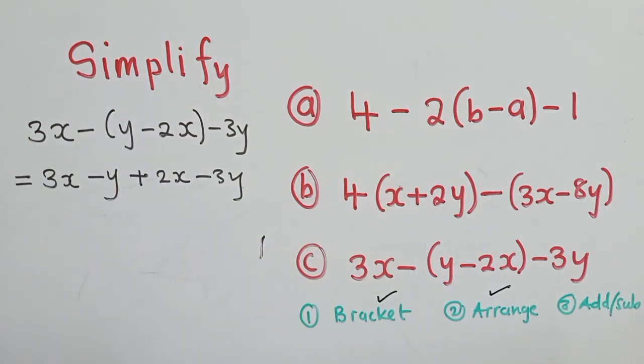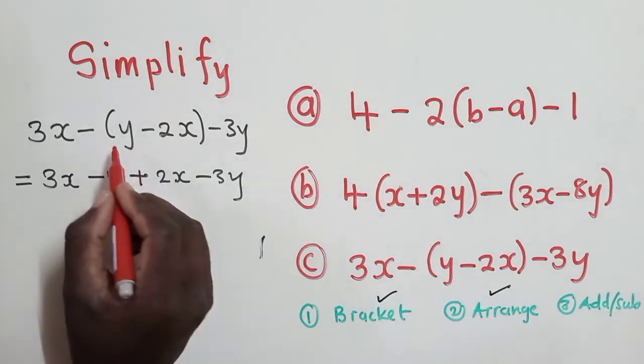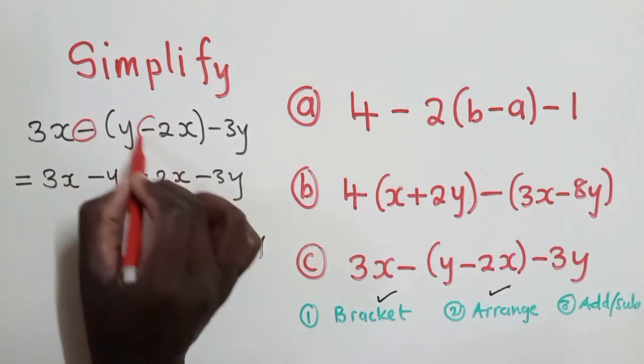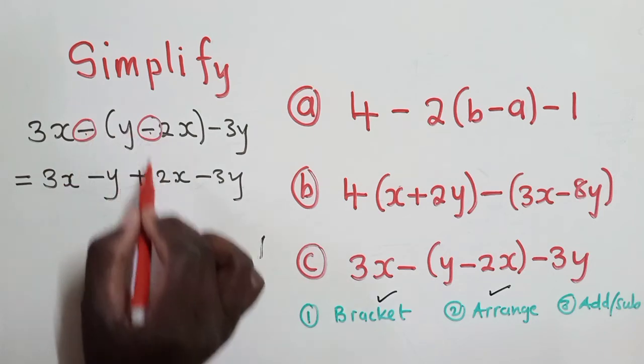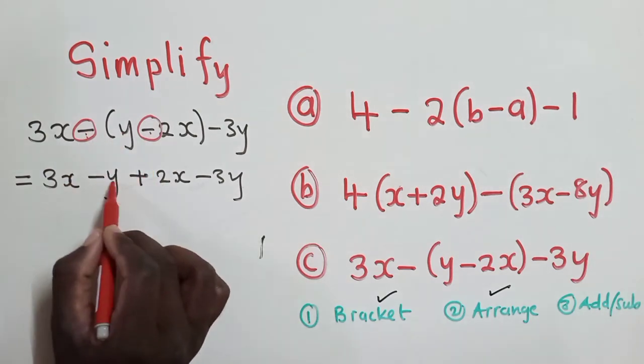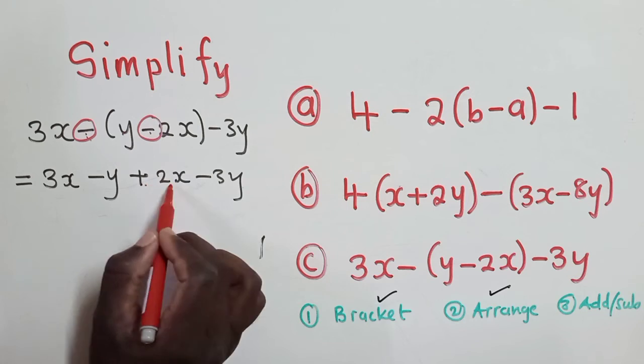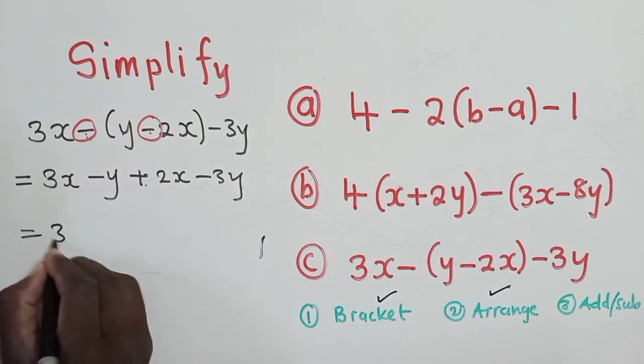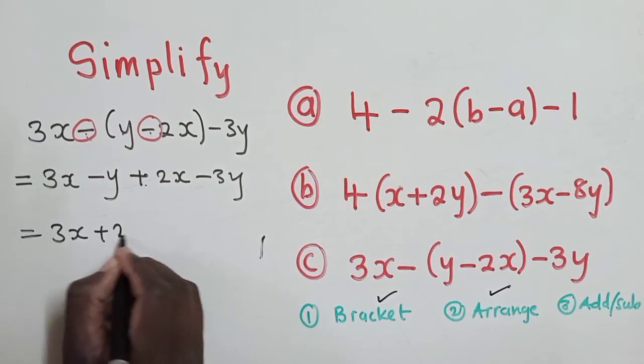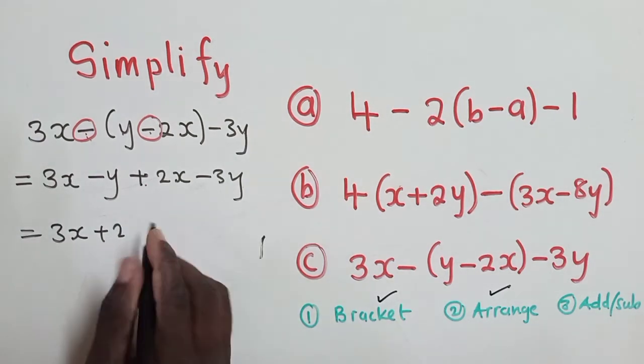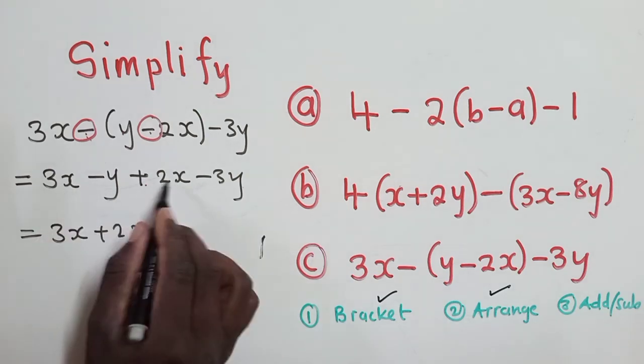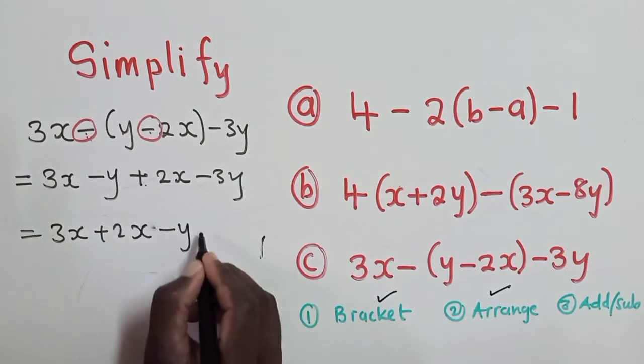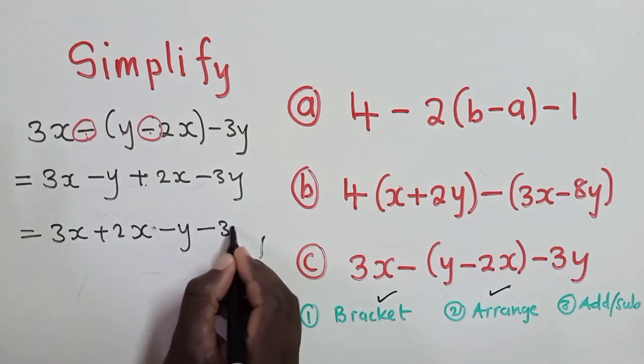So if you have seen what is happening, mostly these examiners, they bring a situation where you need to change the sign. So negative and negative, it gives us a positive. Here it's this one. Here it gives us a positive 2x. Next step, we arrange. So we're going to say 3x plus 2x, we are arranging like terms, minus y minus y minus 3y.